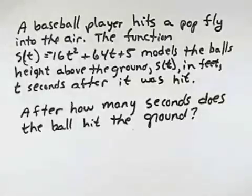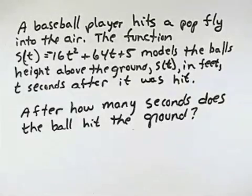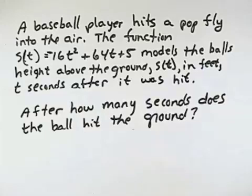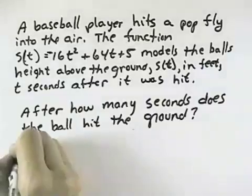A baseball player hits a pop fly into the air. The function S(T) = -16T² + 64T + 5 models the ball's height above the ground, S(T), in feet, T seconds after it was hit. After how many seconds does the ball hit the ground?